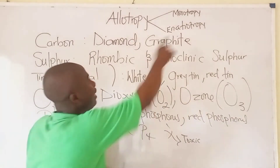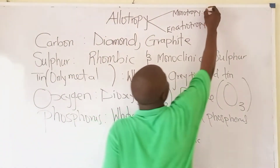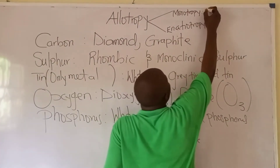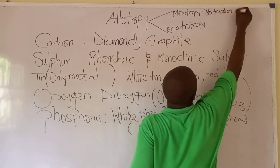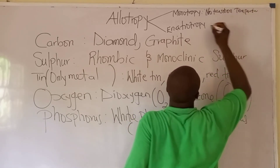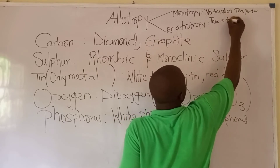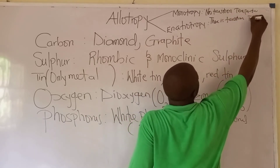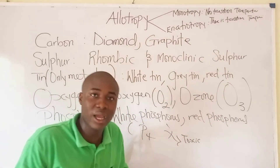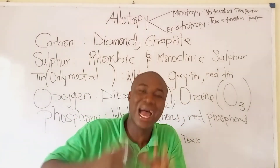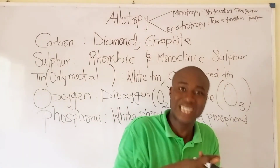In monotropy, there is no transition temperature. But in enantiotropy, there is a transition temperature. Transition temperature is that temperature whereby an allotropic form of an element can move to another form of that same element.